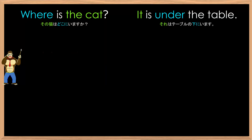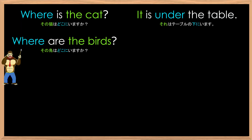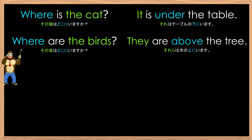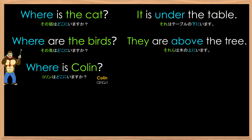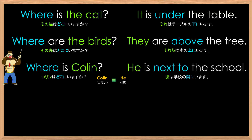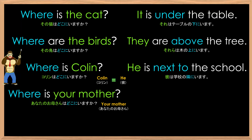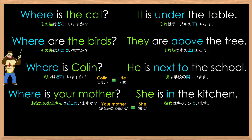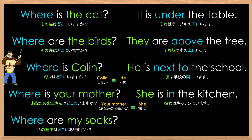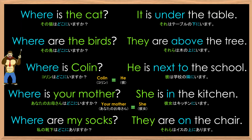Let's practice with some more examples. Where is the cat? It is under the table. Where are the birds? They are above the tree. Where is Colin? He is next to the school. Where is your mother? She is in the kitchen. Where are my socks? They are on the chair.